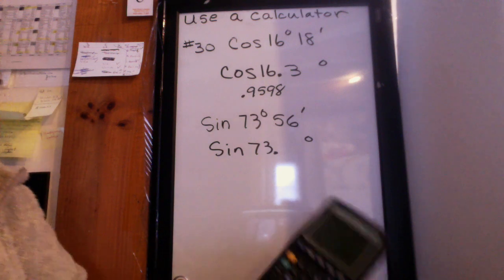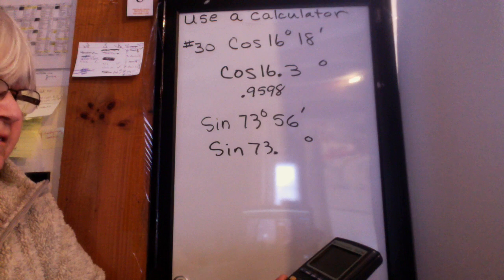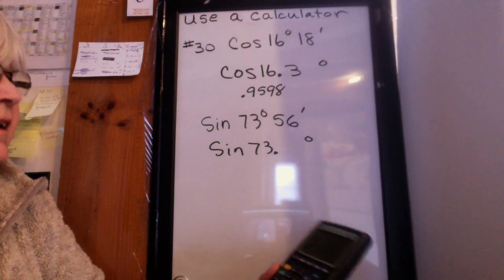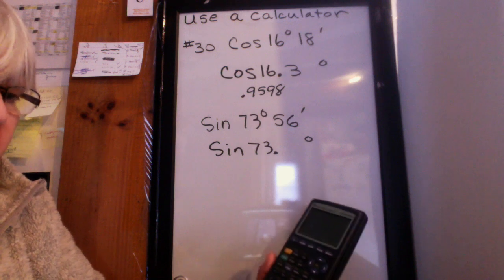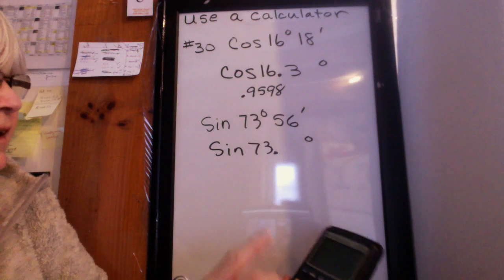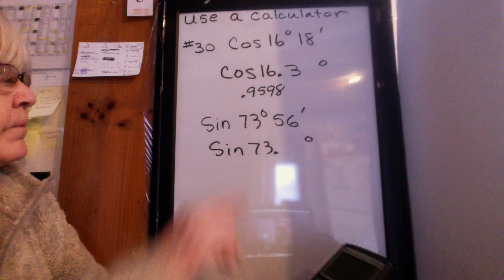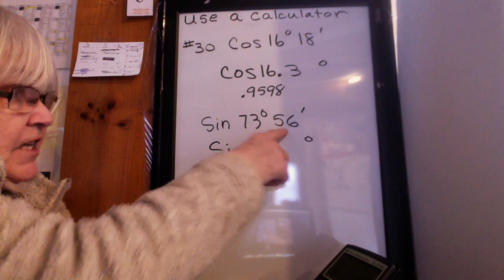Clear your calculator. Take 56 divided by 60. You get a decimal. This one comes out to be 0.93 and it goes on forever. Leave that in your calculator.